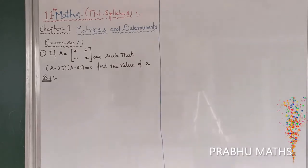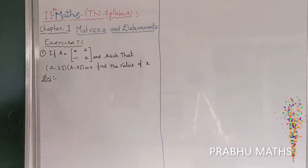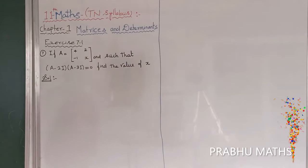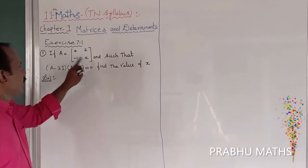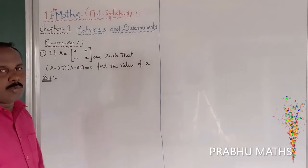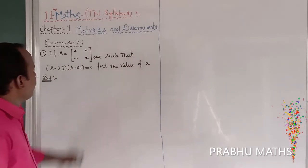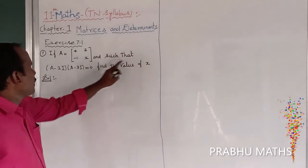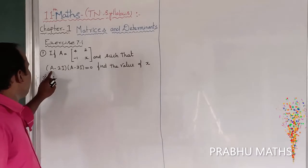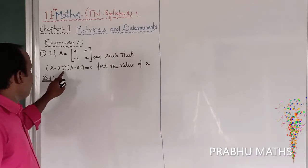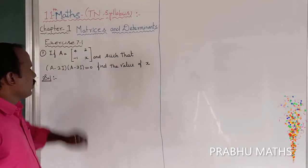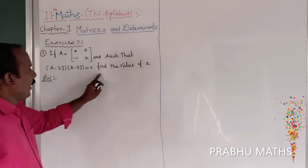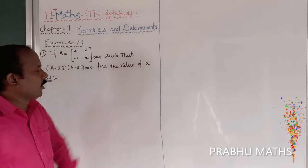Problem 7.1, seventh sum. If A is equal to the 2 by 2 matrix [4, 2; -1, x], and such that A minus 2I times A minus 3I is equal to 0, find out the value of x.